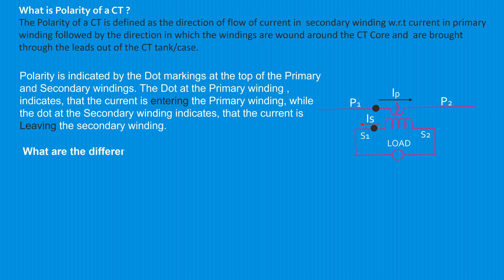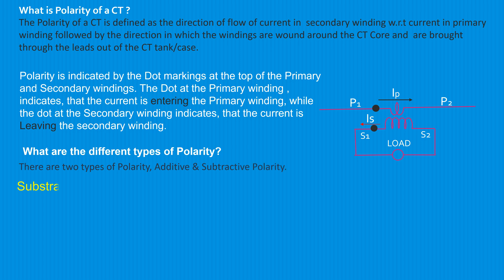What are the different types of polarity? There are two types of polarity: additive and subtractive. In subtractive polarity, the primary and secondary side voltages are 180 degrees out of phase.